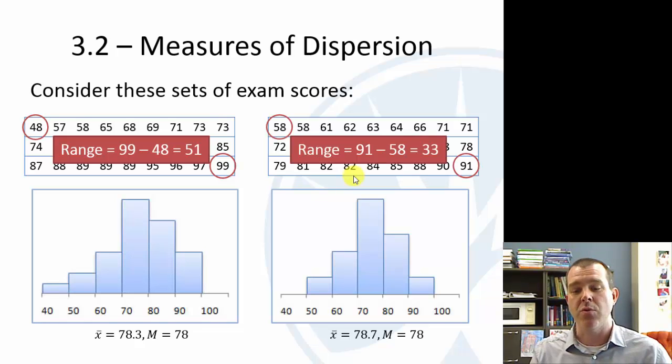For the second one, the range would only be 33. So we would say the first set has a much larger dispersion. It's more spread out than the second set.